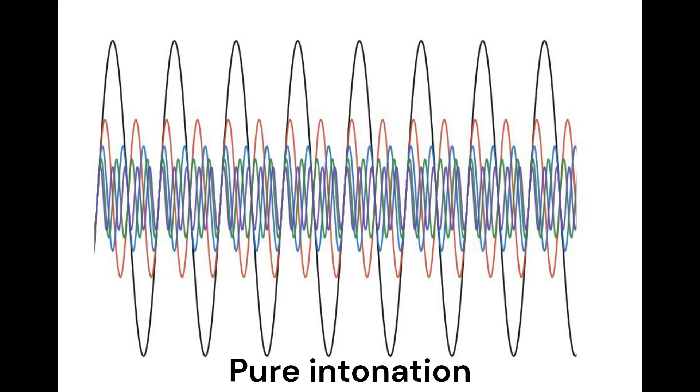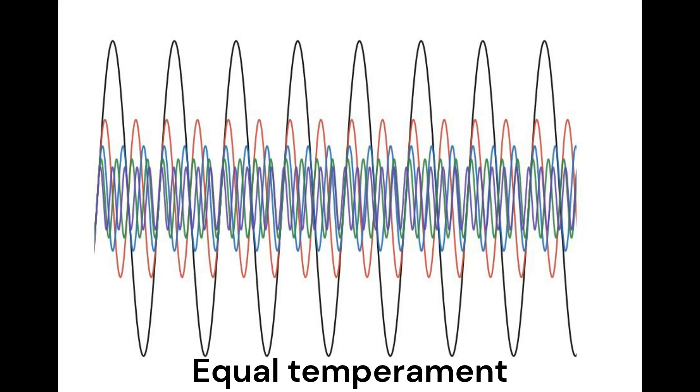You can probably see from these diagrams that the sound waves of major chords which use pure intonation are massively consistent, lining up with each other's vibrations, being at mathematically symbiotic frequencies. However, in the case of equal temperament, this is not the case.